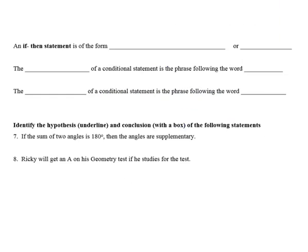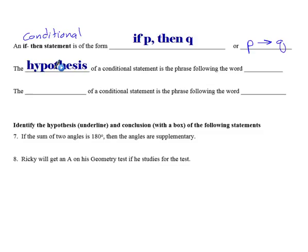If-then statements are sometimes referred to as conditional statements. And they are in the form of if P, then Q. Sometimes you may see it written out symbolically. It looks like this. So if P, then Q.